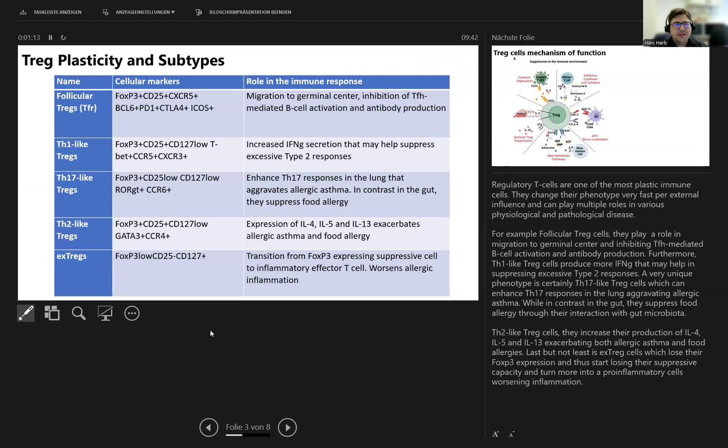As a starter, T-reg cells is one of the most plastic immune cells. They change their phenotype very fast per external influence and can play multiple roles in various physiological and pathological diseases. For example, follicular T-reg cells play a role in migration to germinal center and inhibiting TfH-mediated B-cell activation and antibody production.